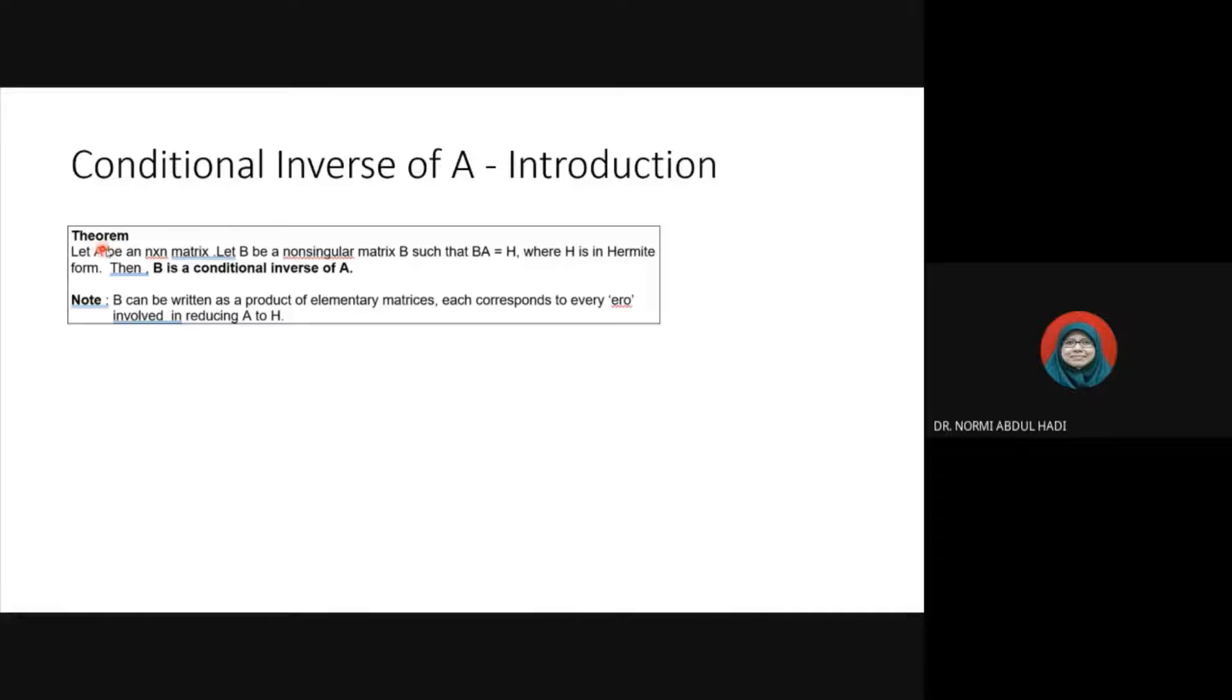Conditional inverse of A. The theorem: Let A be an n by n non-singular matrix such that BA equals H, where H is in Hermite form. Then B is a conditional inverse of A.